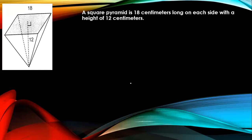A square pyramid is 18 centimeters long on each side with a height of 12 centimeters. Find the slant height, the length of edge, the lateral area, and the surface area.